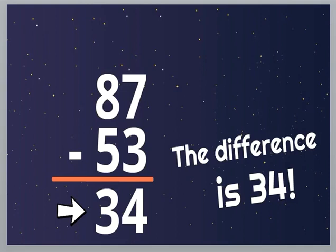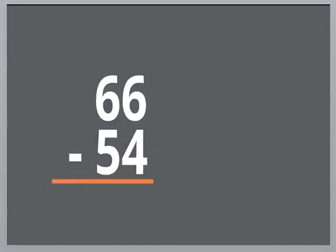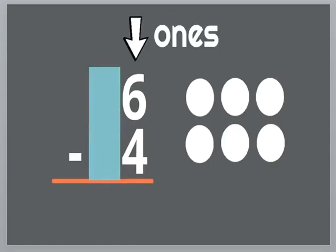Let's continue. We have this next exercise. Tenemos este siguiente ejercicio. Sixty-six minus fifty-four. Sesenta y seis menos cincuenta y cuatro. Let's begin with the ones column. Empecemos con la columna de las unidades.